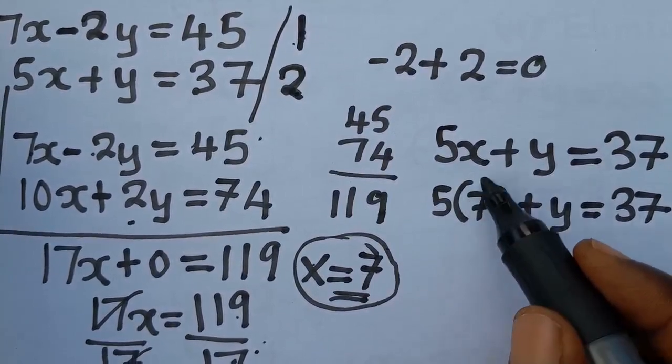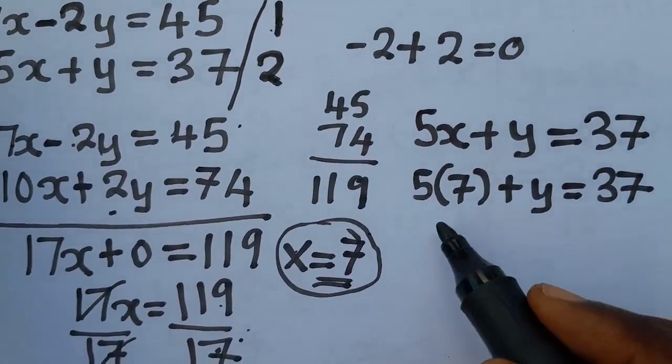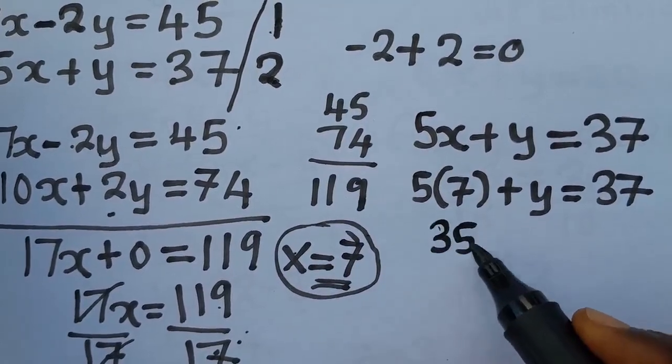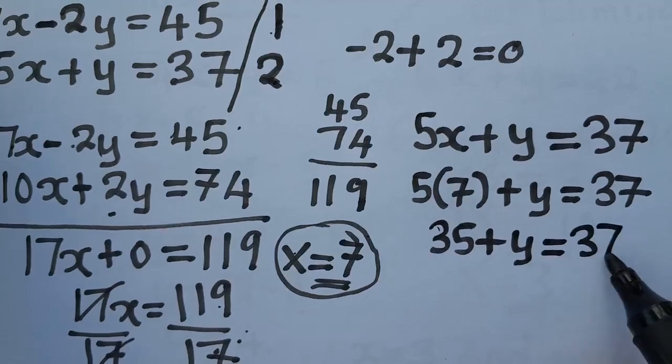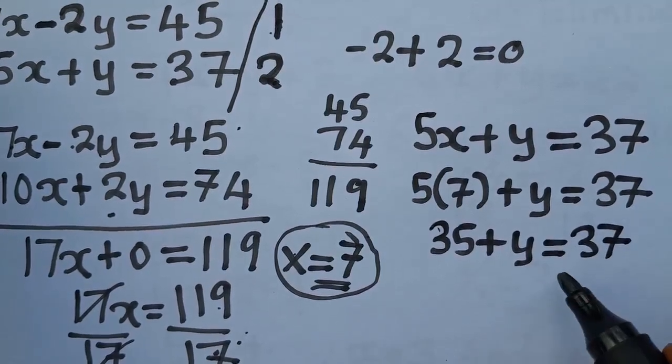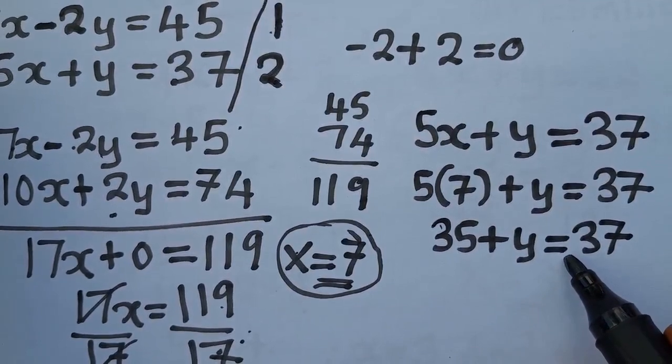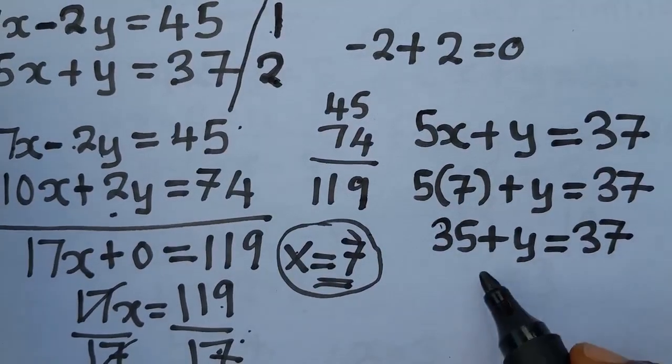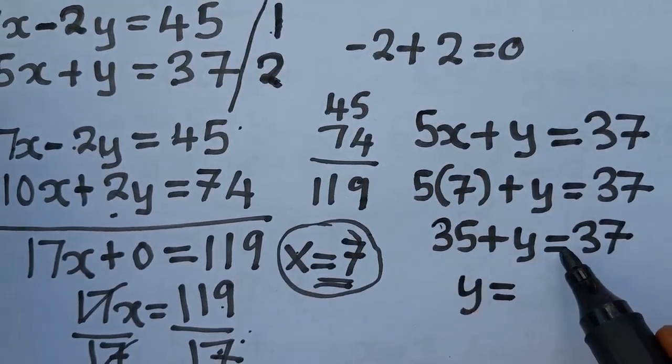This 35 goes to the other side of the equation. Maybe someone may not understand what I mean. This is 35 plus y is equal to what? 37. When you reach here, you need to group the like terms together. This is y is equal to, this 35 goes to the other side of the equation.